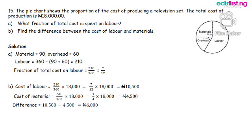The last but not the least question: The pie chart shows the proportion of the cost of producing a television set. The total cost of production is 18,000 Naira. A: What fraction of total cost is spent on labor? B: Find the difference between the cost of labor and materials.